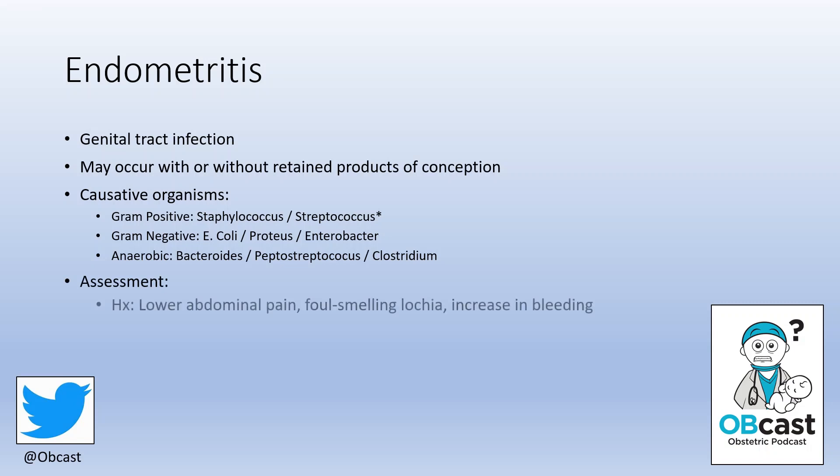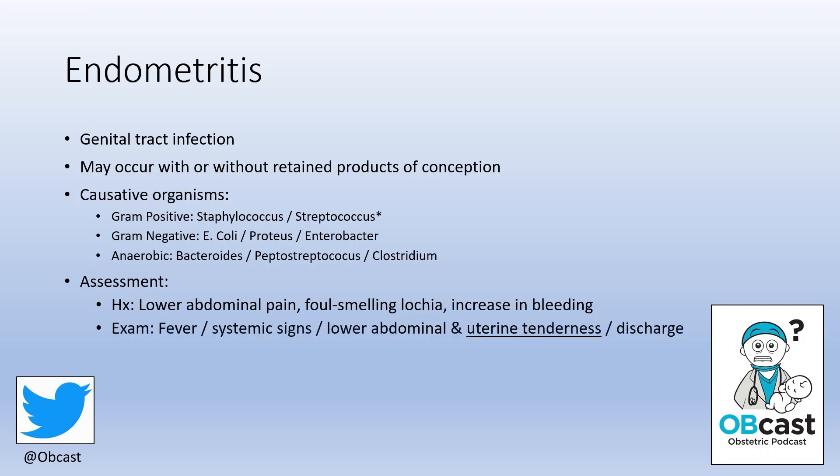When assessing these patients, the symptoms of endometritis often include lower abdominal pain, foul-smelling vaginal discharge, or an increase in bleeding when bleeding had naturally been settling down. On examination, they often have a fever and haemodynamic changes consistent with sepsis, and may have lower abdominal tenderness. A speculum exam looking for and swabbing any discharge is very useful, and bimanual examination can be very helpful as these women often have significant uterine tenderness, which can confirm the diagnosis.